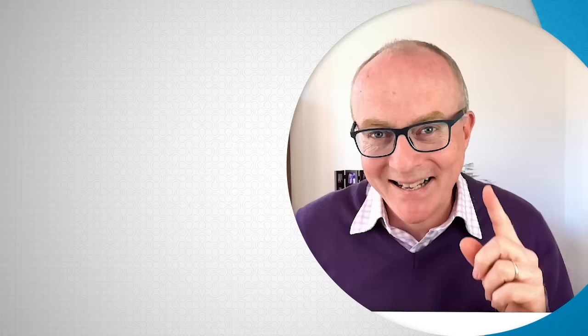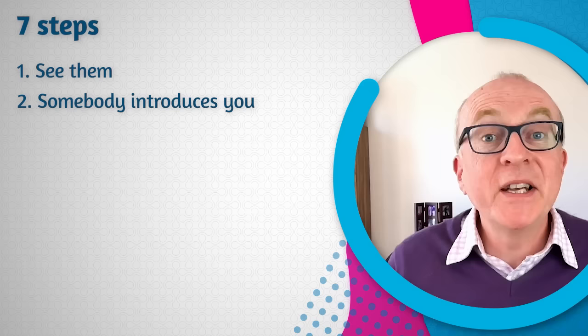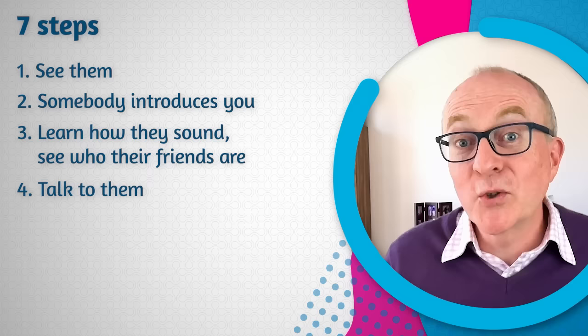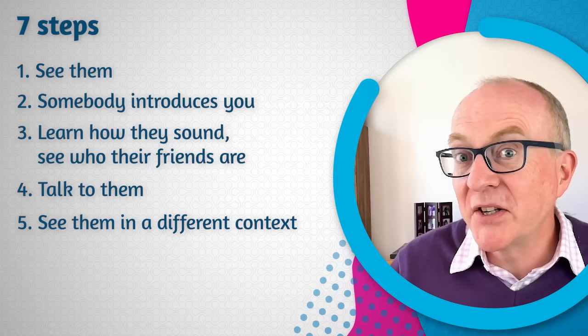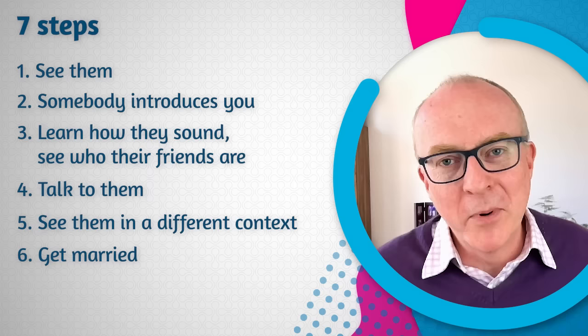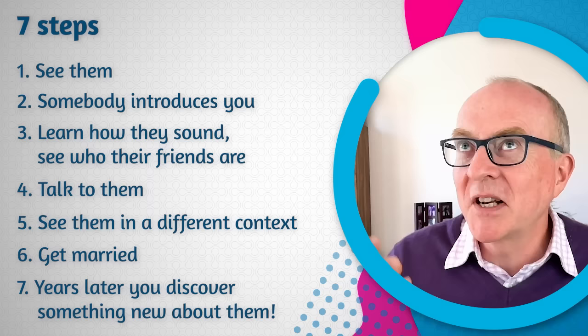Learning English is a bit like dating someone — there are seven steps. One, you see them but you have no idea who they are. Two, somebody introduces you. Three, you learn how they sound and see who their friends are. Four, you start to talk to them. Five, you see them in a different context and they behave a bit differently. Six, you get married — and you think, now I know them. But the fun is just beginning. You don't know them. And then ten years later — step seven — you discover something completely new.